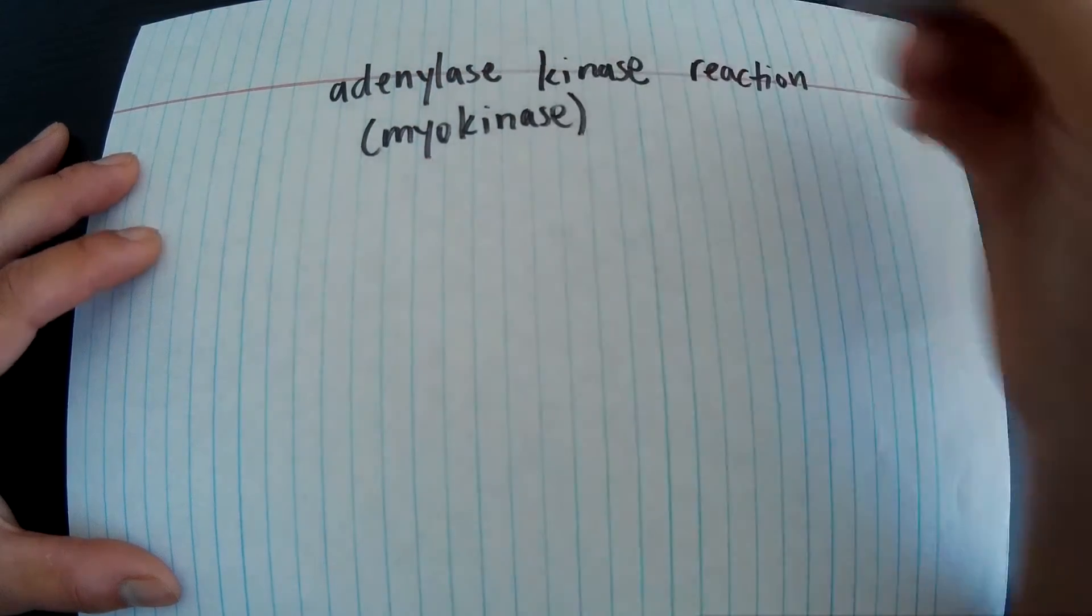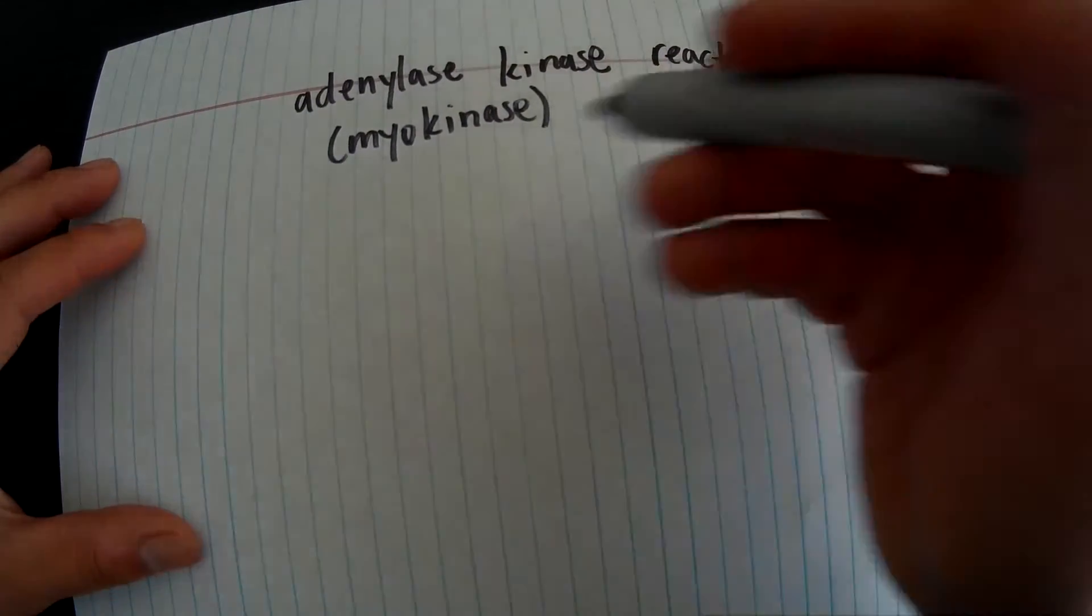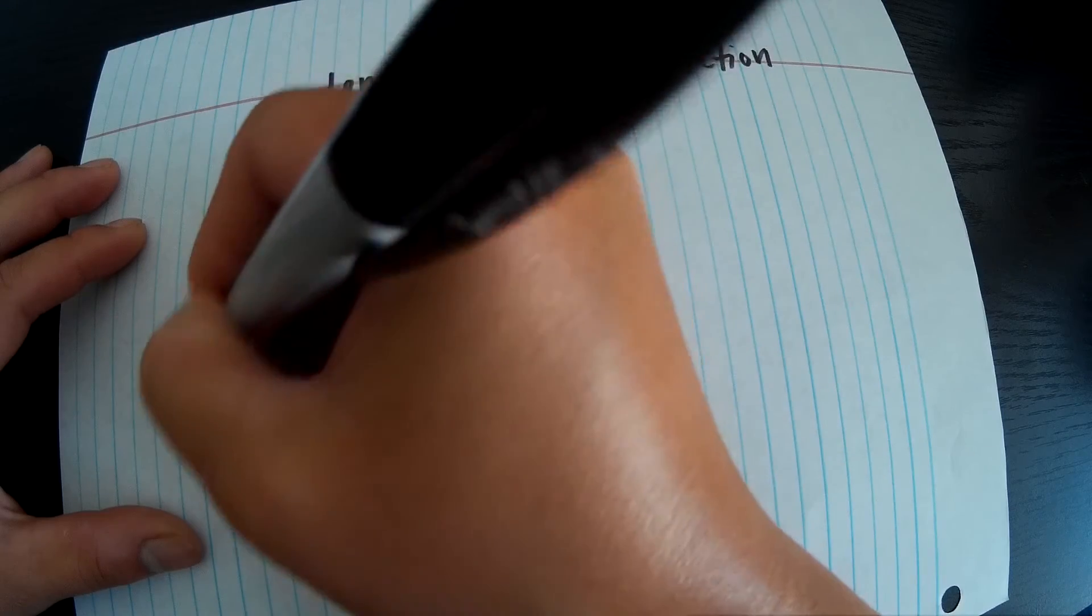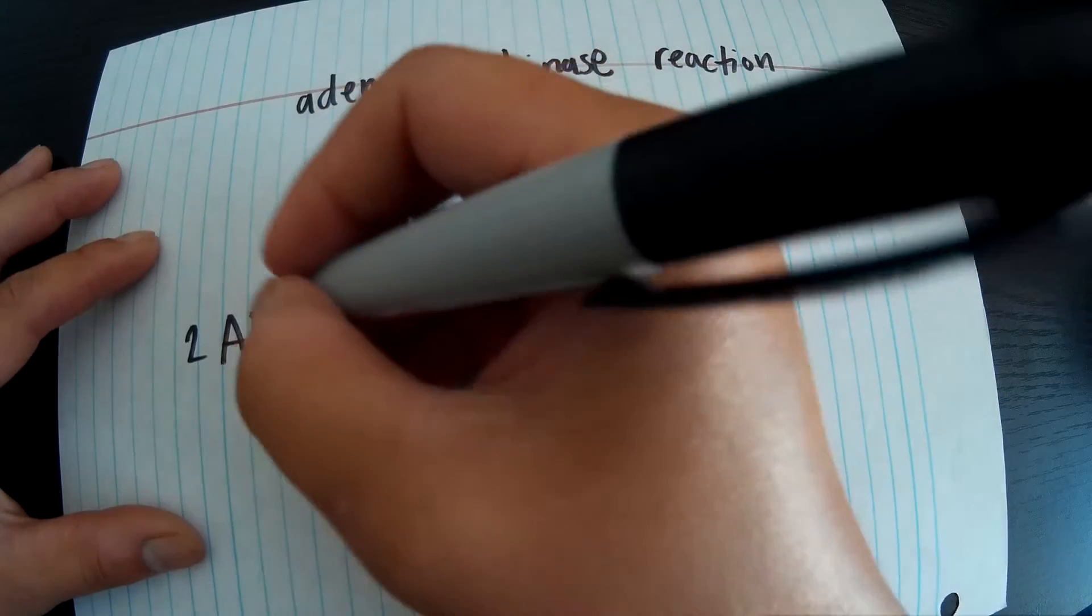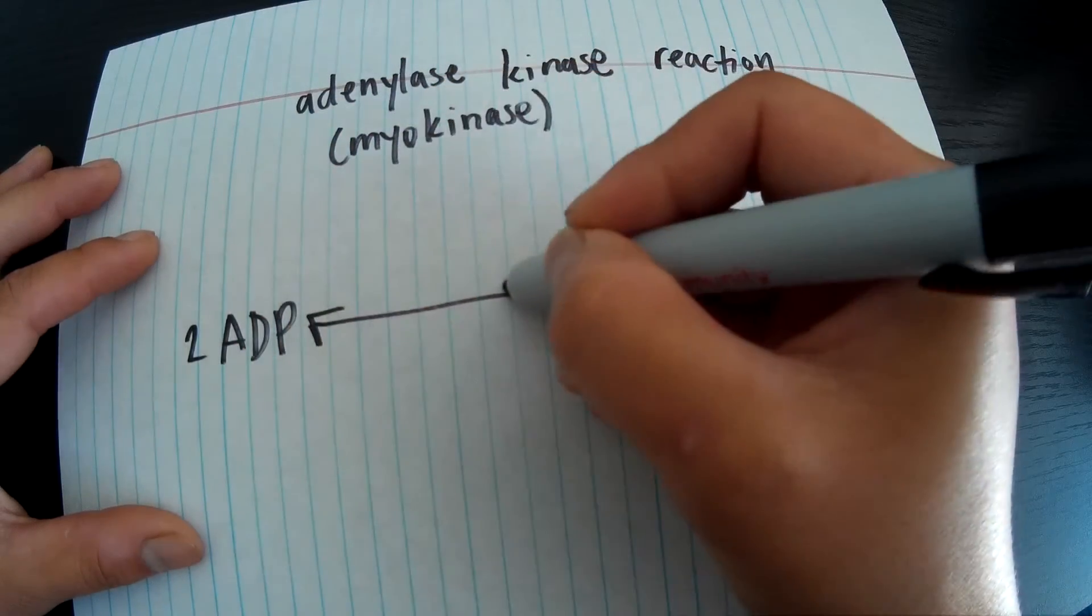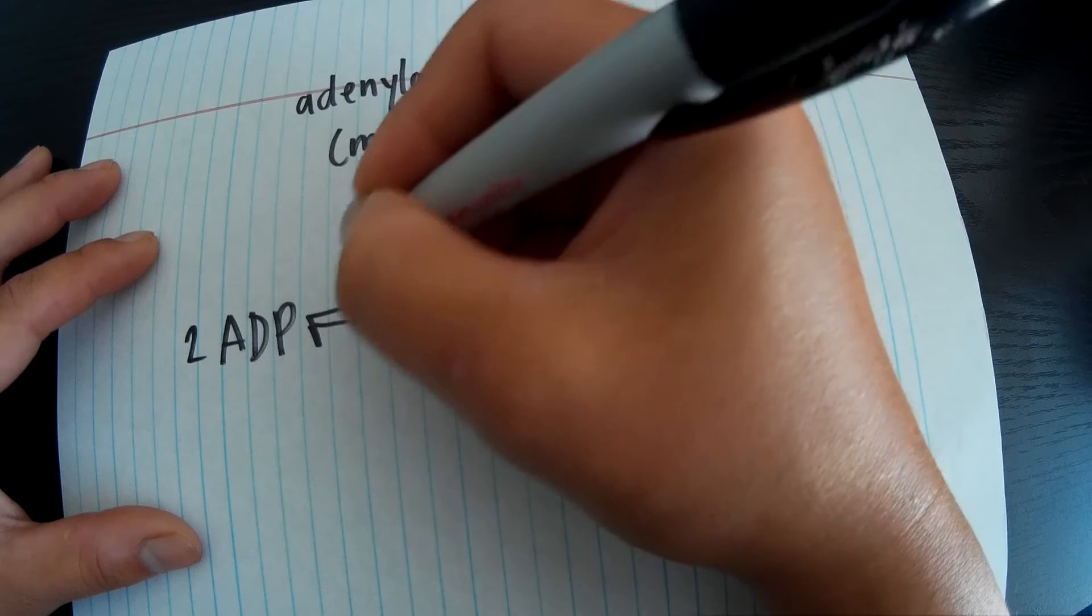Now instead of taking a phosphate and ADP or adenosine diphosphate, we'll take two ADP. With the help of the magical adenylate kinase, we'll create ATP, adenosine triphosphate, and AMP, adenosine monophosphate.